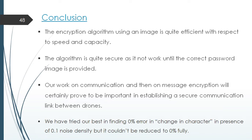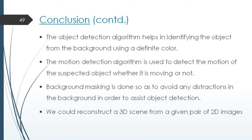Conclusion. The encryption algorithm using an image is quite efficient with respect to speed and capacity. The algorithm is quite secure as it will not work until the correct password image is provided. Our work on communication and message encryption will certainly prove to be important in establishing a secure communication link between the drones. We have tried our best in finding 0% error in change in character in presence of 0.1 noise density, but it could not be reduced to 0 fully. The object detection algorithm helps in identifying the object from the background using a definite color. The motion detection algorithm is used to detect the motion of a suspected object, whether it is moving or not. Background masking is done so as to avoid any distraction in the background in order to assist object detection. We could reconstruct the 3D scene from a given pair of 2D images.